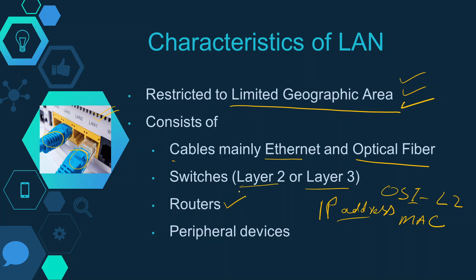The LAN can also consist of routers. A router is used when we want to move from the boundary of the LAN to another LAN or to the internet. The router is also a Layer 3 device. At the end, we have peripheral devices, which may consist of PCs, laptops, printers, servers, and many other devices.